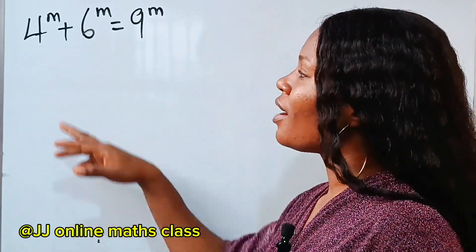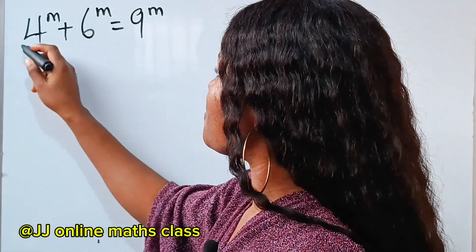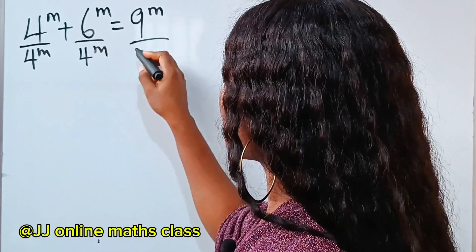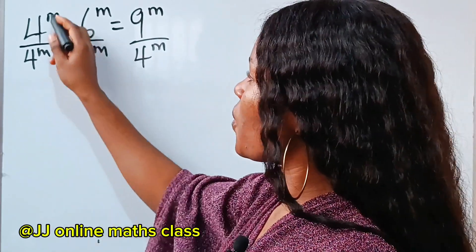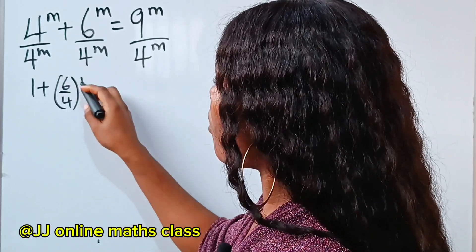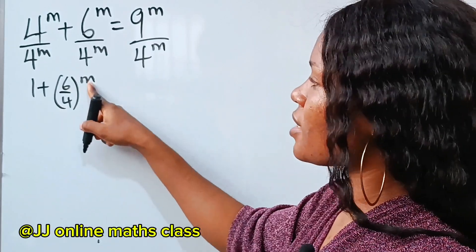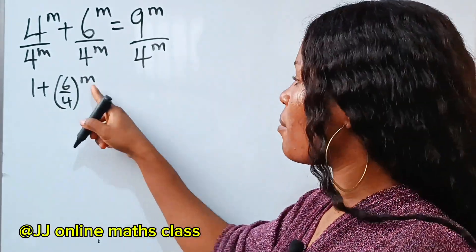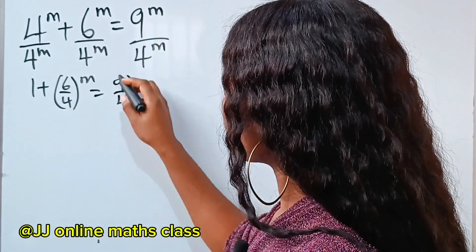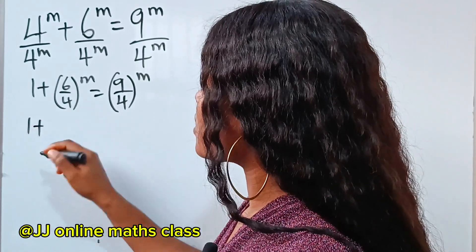Welcome to my channel. Let's go ahead and find the value of m. First, let's divide through by 4 to the power of m. If we do that, we'll have 1 plus 6 over 4 to the power of m. Since they have the same power, you can put the two in brackets and raise them to the power of m, which is equal to 9 over 4 raised to the power of m.